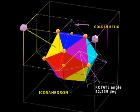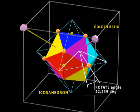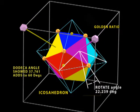This angle of rotation comes to 22.239. The dodeca showed 37.761. They both add up to 60 degrees spot on. You can't do better than that. That's sacred geometry.